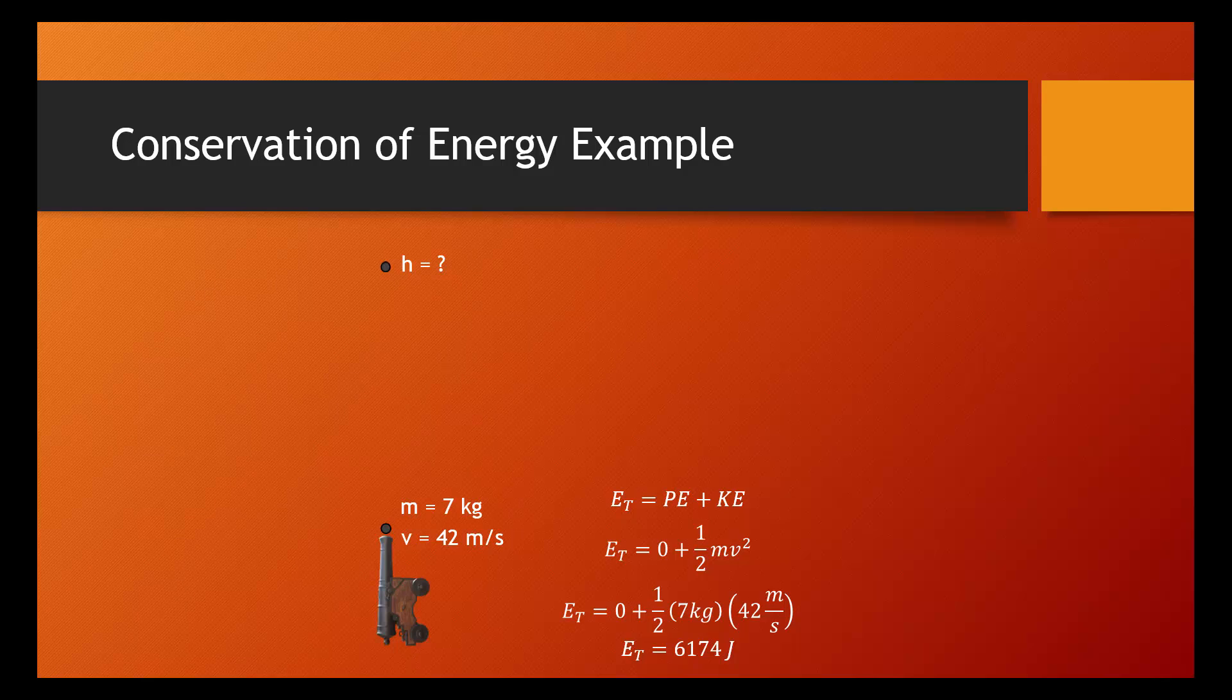Great, you might be thinking. But we weren't looking for the total energy of the cannonball. We're looking for the height of the cannonball. Well, you know what? Hold your horses. If we know the total energy of the cannonball right after it's fired, then we know the total energy of the cannonball when it gets to its highest point. It's the same. That's conservation of energy. The total energy of the cannonball remains constant. If it was 6,174 joules when it was fired, it's always going to be 6,174 joules.